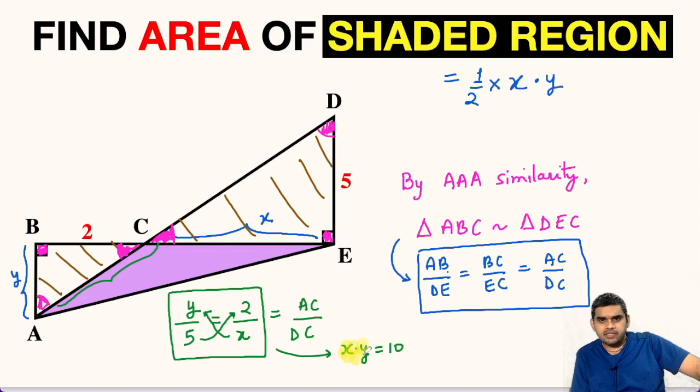Now, we can substitute this value of XY as 10 here in the area of the shaded region. So this will give us area of the shaded region equal to half times 10. On simplifying, we get 5.